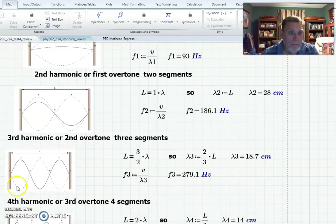Third harmonic, you've got three segments. So each one's a half, so the length of the string is three halves lambda, or lambda is two thirds L. Again, use that to find your frequency.